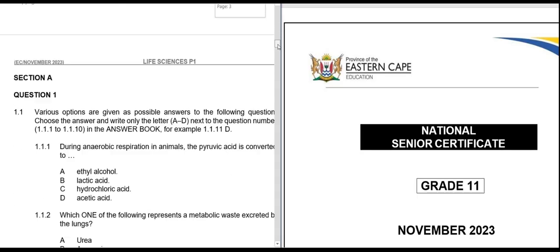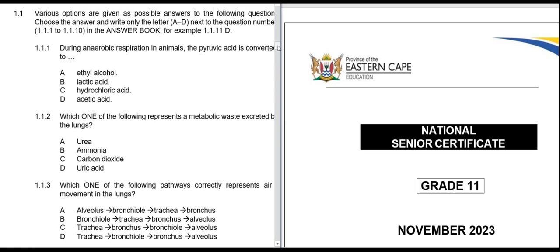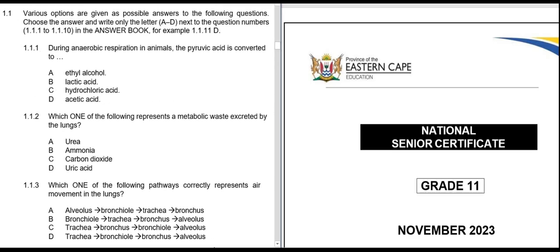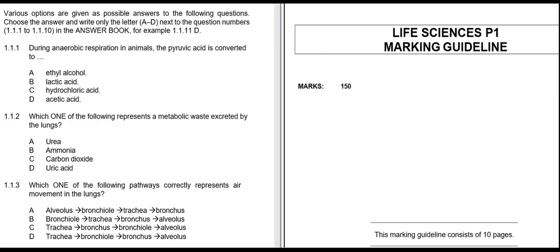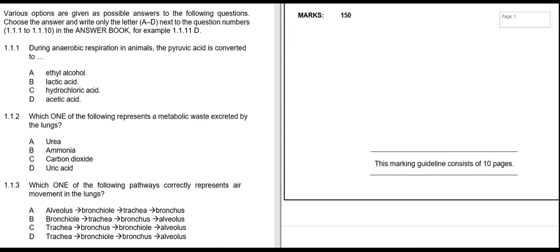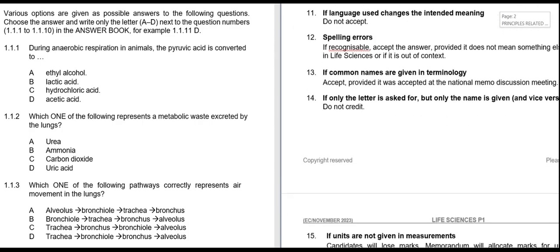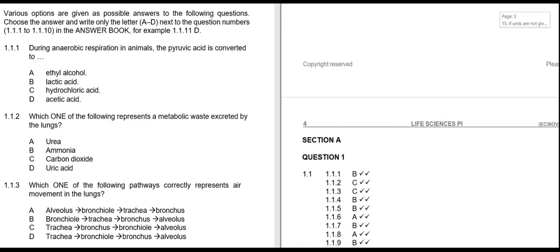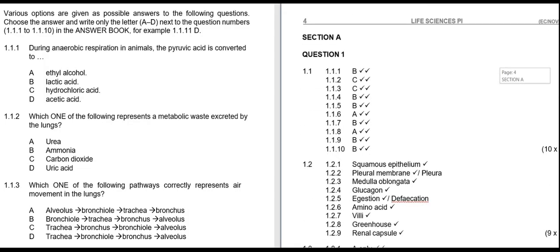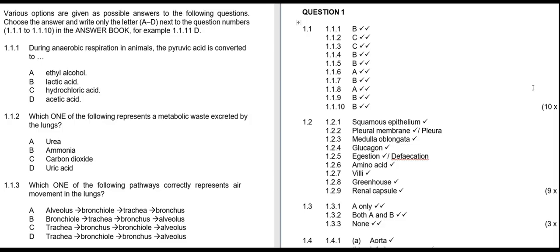Moving to the first part of the question paper, we have our multiple choice section. This is our multiple choice section whereby we have questions 1.1, 1.2, and 1.3. Going to the responses, you'll see these are our answers for questions 1.2 and 1.3.